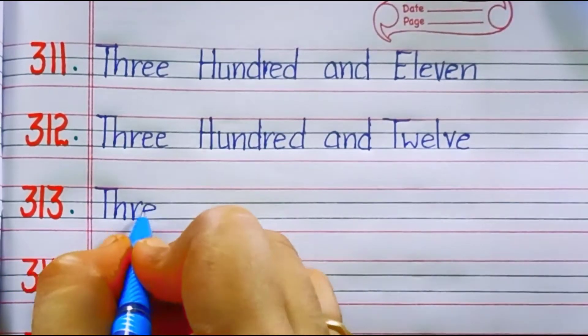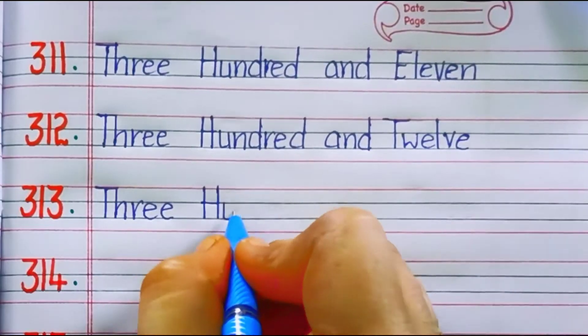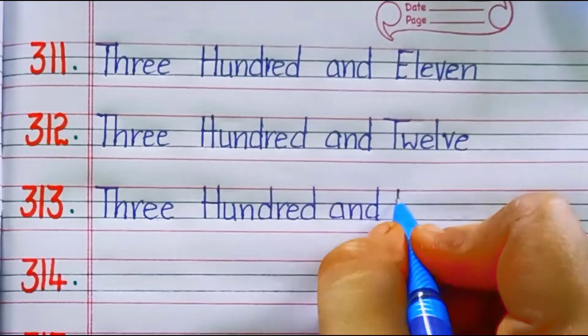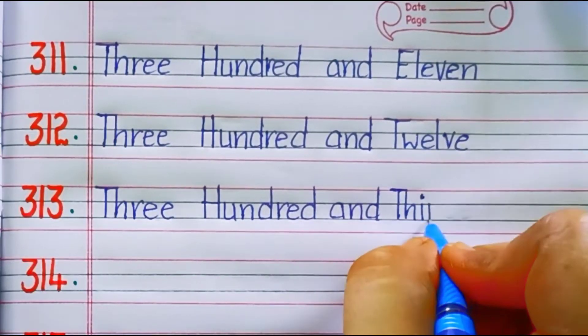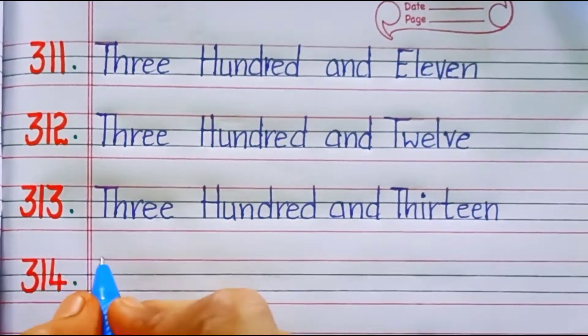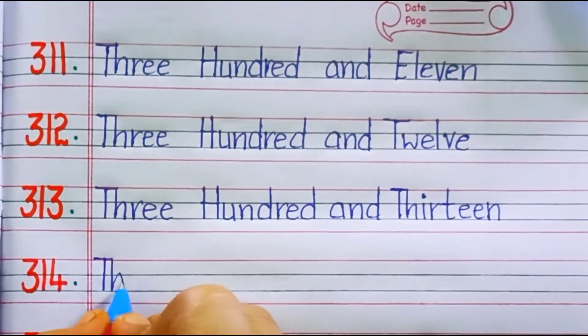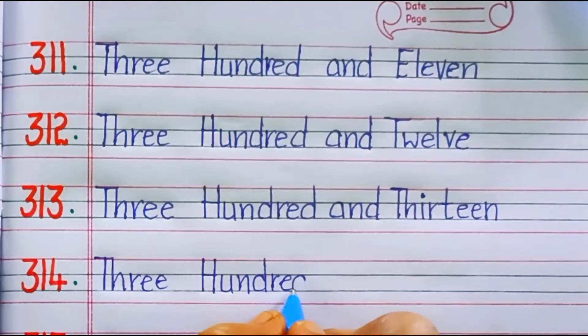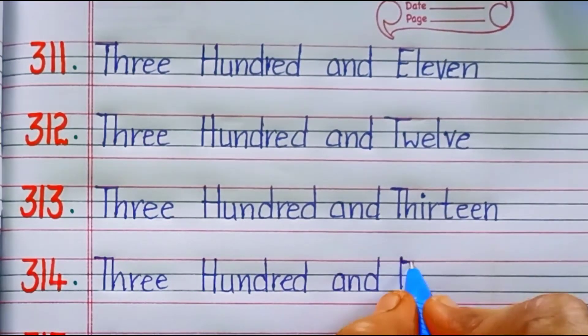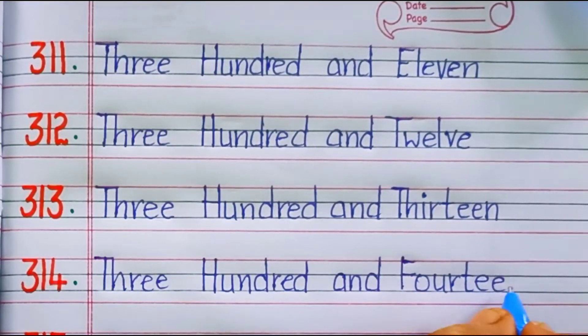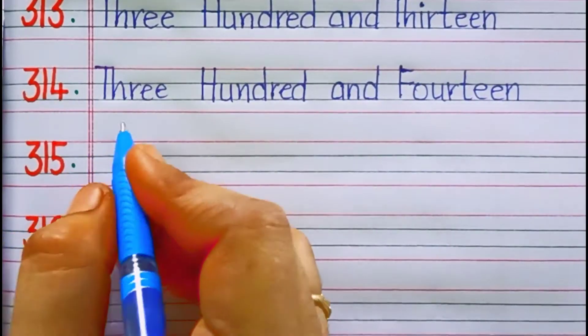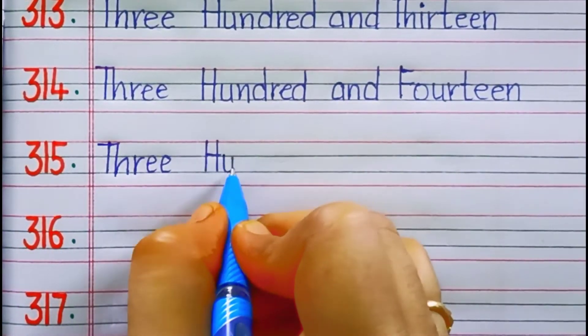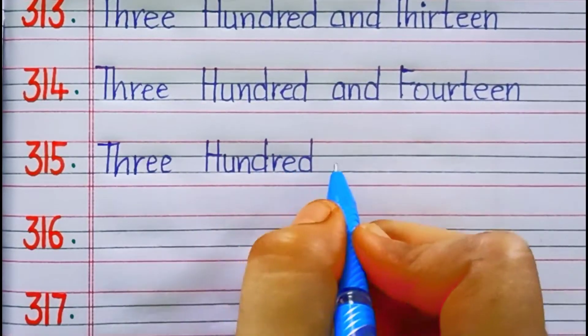313. Three hundred and thirteen. T-H-I-R-T-E-E-N, thirteen. Three hundred and fourteen. F-O-U-R-T-E-E-N, fourteen. Three hundred and fifteen. F-I-F-T-E-E-N, fifteen.